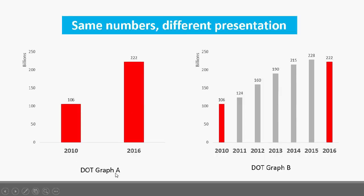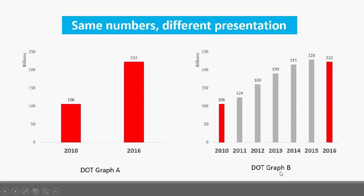Yung dahilan kung bakit misleading yung graph A is dahil merong nakatagong data na crucial para maintindihan mo yung context ng mga pangyayari. Ang tawag dito is cherry picking — na-discuss ko na rin ito dun sa part 1. Basically, ito yung practice na pinapakita mo lang yung mga parts na sumusuporta dun sa conclusion na gusto mong palabasin o sa agenda mo, kahit na merong ibang data na hindi ito sinusuportahan o contradictory dito sa sinasabi mo. Yung paglampas sa 5 years sa isang time series analysis ay ina-undermine niya yung growth na nangyari on those 5 years, and in a way, that can be a misleading thing to do.